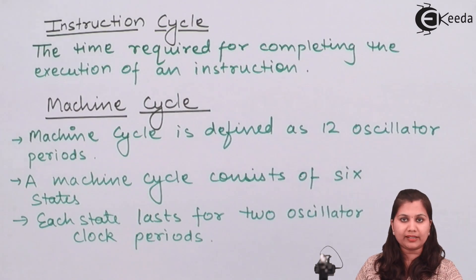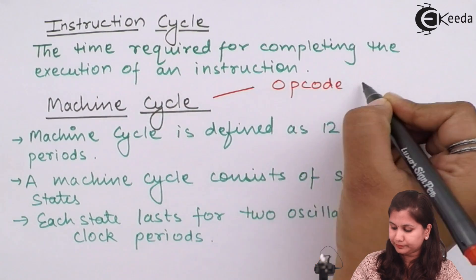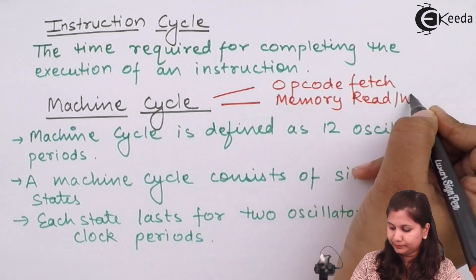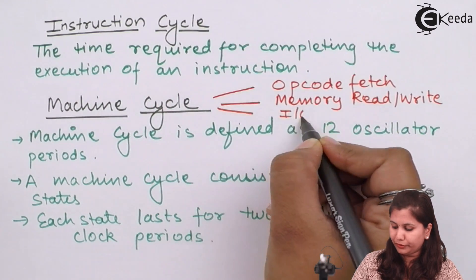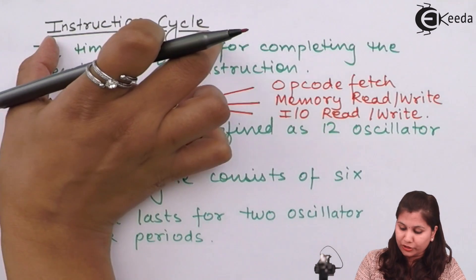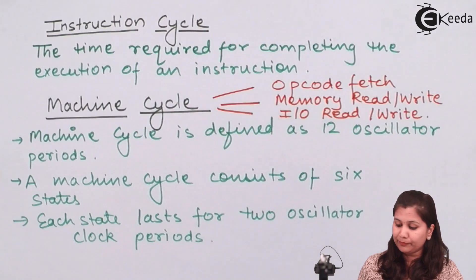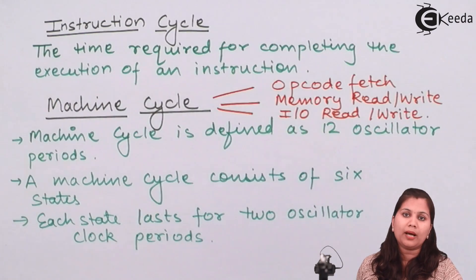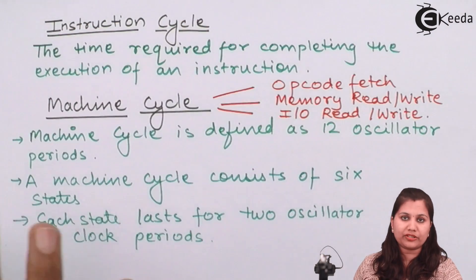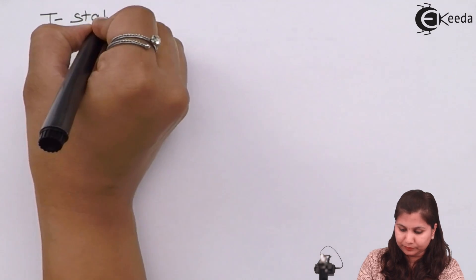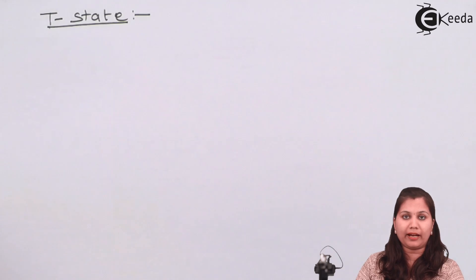Machine cycles can be of various types: opcode fetch, memory read, memory write, input-output read, and input-output write. We can say that an instruction cycle consists of one to four machine cycles — when an instruction is executed, its execution will consist of one to four machine cycles. Machine cycle is a part of instruction cycle, and each machine cycle consists of 12 oscillator clock periods. This leads to another term called T states.